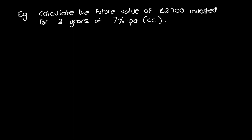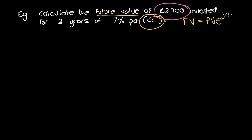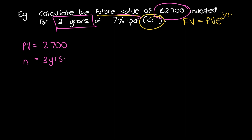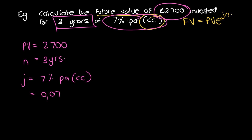Example: calculate the future value of R2700 invested for three years at 7% per annum continuously compounded. The CC tells us our formula is FV equals PV·e^(jn). Writing down what we know: PV equals 2700, n equals 3 years, j equals 7% per annum CC, which in decimal fraction notation is 0.07 — we just take 7 and divide by 100.